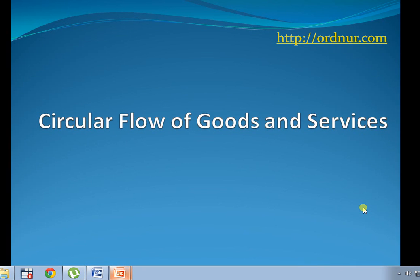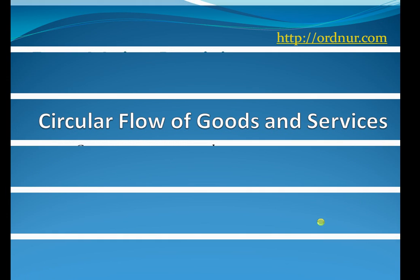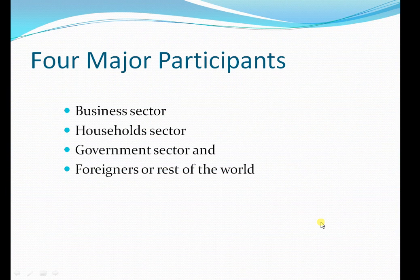Today's learning tutorial is about circular flow of goods and services. The four major participants of an economy are the business sector, household sector, government sector, and foreigners or rest of the world. Each of these sectors interact with each other to ensure the effective flow of goods and services within an economy.